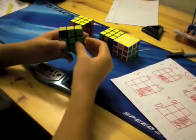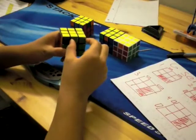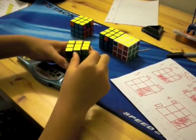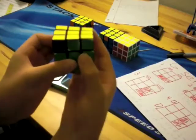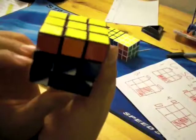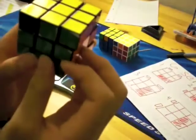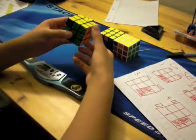So for our first case, we have a 1x1x2 block here and then headlights in the back. So it looks like this: block, headlights. And the algorithm is...